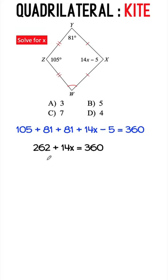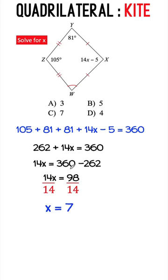Subtract 262 from both sides to get 14X equals 98, and dividing by 14 both sides of the equation, we found that X is equal to 7.